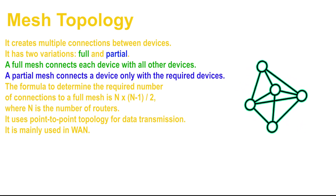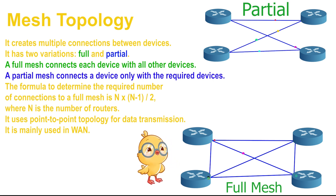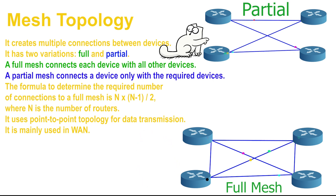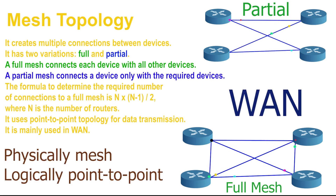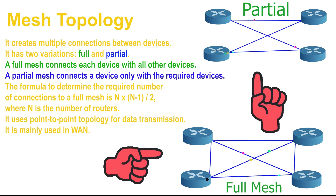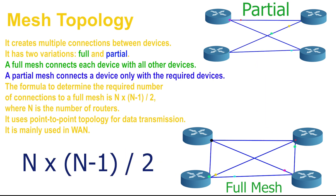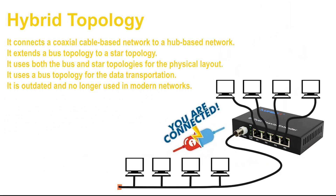A mesh topology creates multiple connections between devices. There are two types: full and partial. A full mesh connects every device with all other devices in the network. A partial mesh connects a device only with the necessary devices. Both use point-to-point topology for data transportation. This topology is mainly used in WAN to connect routers at different locations. A direct connection between two routers speeds up data transmission but increases network cost. The formula to determine the required connections for a full mesh is n × (n − 1) / 2, where n is the number of routers. For example, four routers need six connections to form a full mesh.